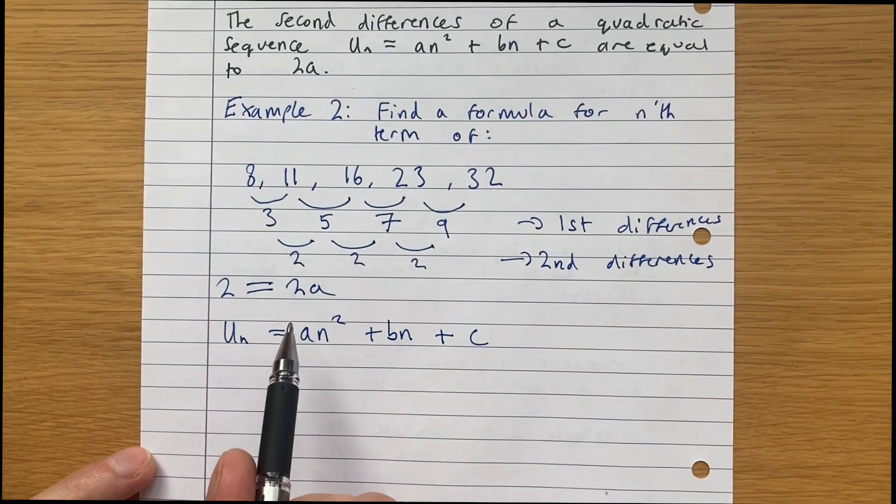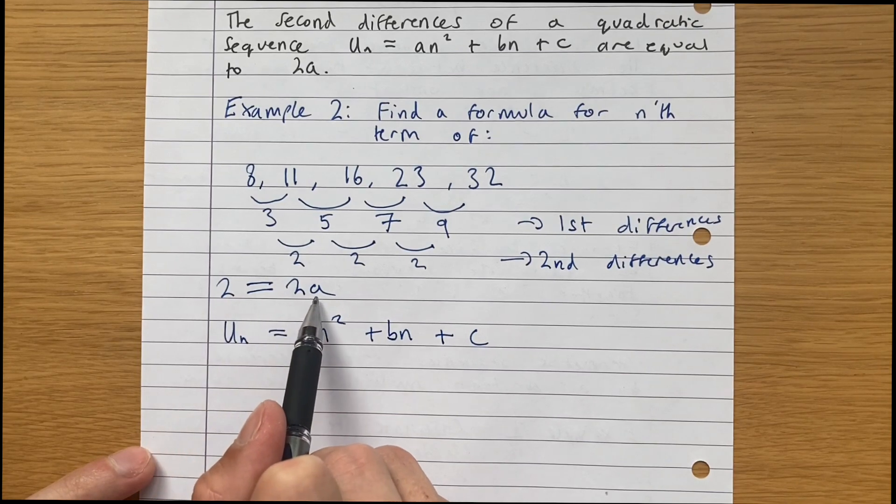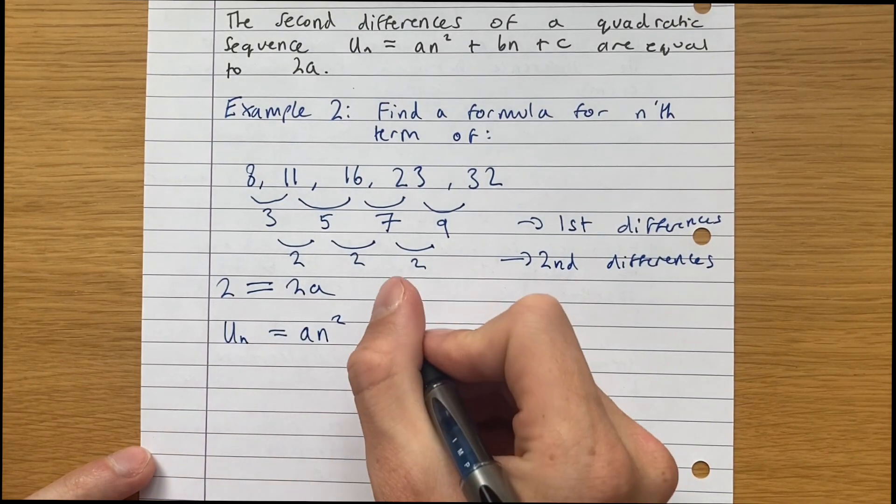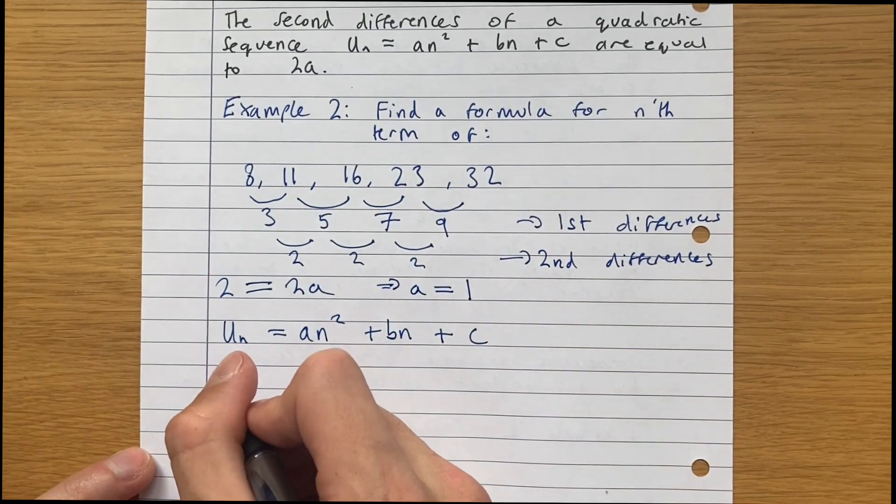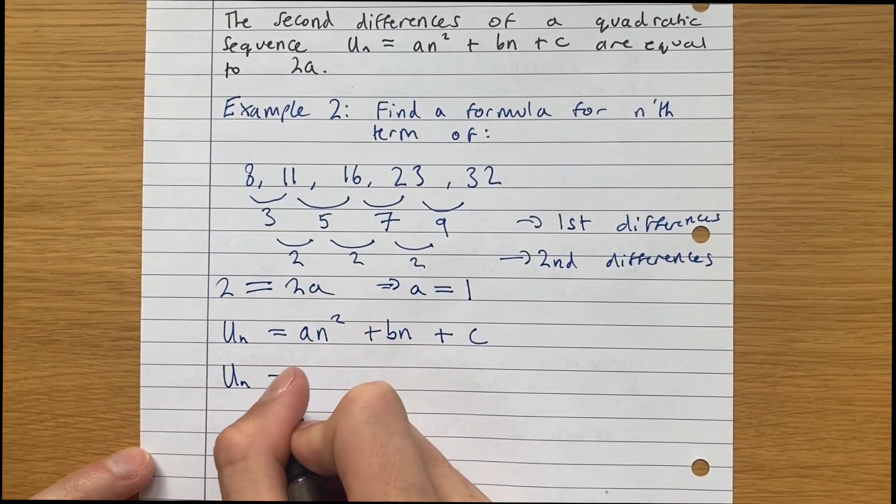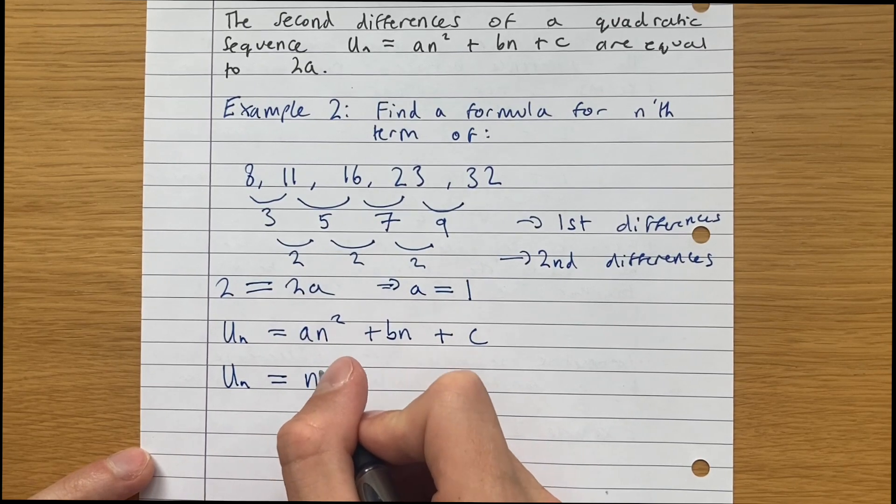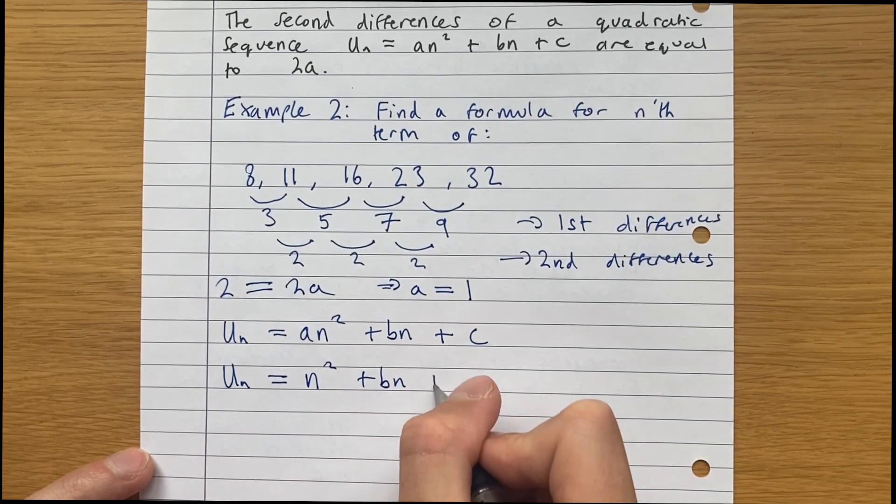We're told here that 2 is equal to 2a. So this just means that a equals 1. We know that our sequence is of the form un equals 1n squared plus bn plus c.